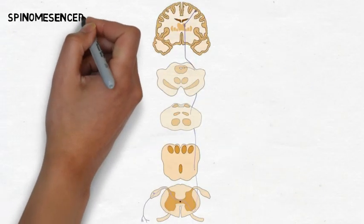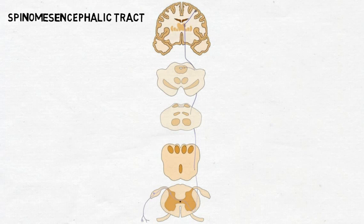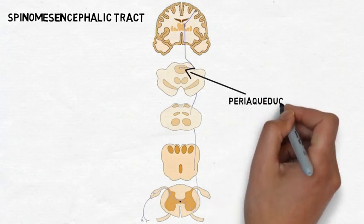The spinomesencephalic tract, also known as the spinotectal tract, plays an important role in the control and inhibition of pain. Fibers in the spinomesencephalic tract follow the same path as the spinothalamic tract, but they synapse in an area of the midbrain called the periaqueductal gray.